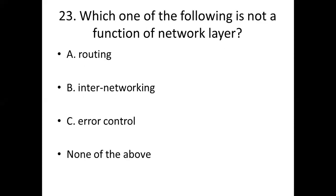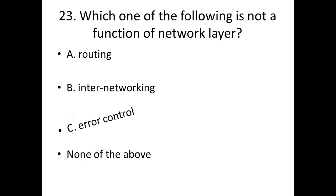Question 23: Which one of the following is not a function of the network layer? Option A: routing. Option B: inter-networking. Option C: error control. Option D: none of the above. Answer: Option C, error control.